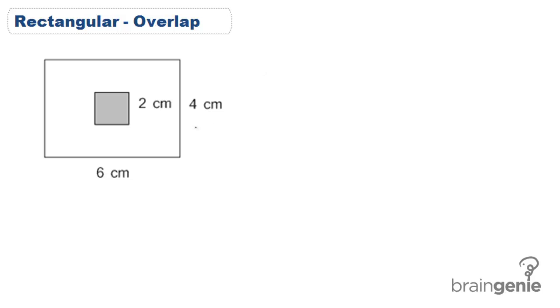Let's start with the area of the rectangle. We know that the rectangle is 4 centimeters by 6 centimeters and the area of a rectangle is equal to length times width. So here the area of our rectangle is 4 times 6 or 24 centimeters squared.